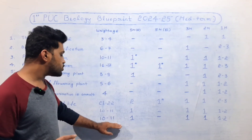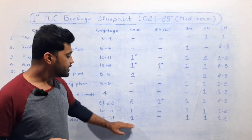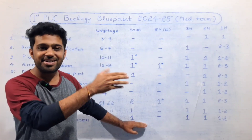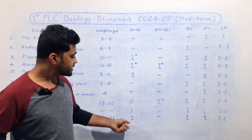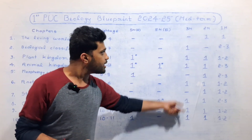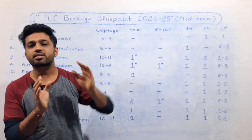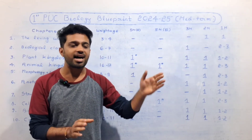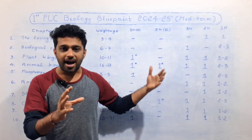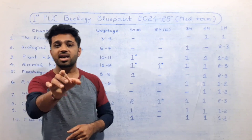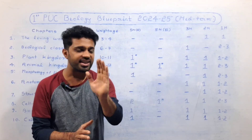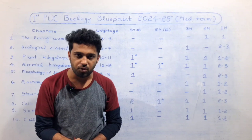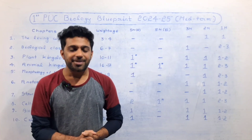Cell Cycle and Cell Division — 10 to 11 marks in the mid-term exam. A 5-mark question is related to this chapter. There are also 3-mark, 2-mark and 1-mark questions. All the best for preparation. Jai Hind, Vande Mataram.